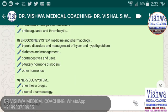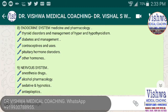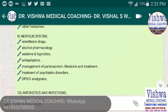In the endocrine system medicine and pharmacology, we take thyroid disorders — hypothyroid, hyperthyroid, and goiters — and their management from medical, surgical, and pharmacology points of view. One of the most important topics is diabetes and its management; a separate lecture is devoted to diabetes as it is the most important metabolic disorder. We also cover contraceptives, pituitary hormone disorders, and other hormones.